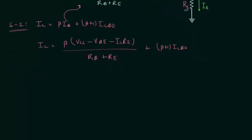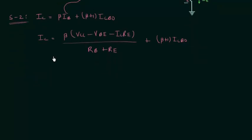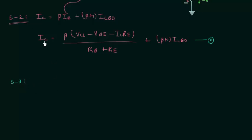So we are done with step number two. In step number three we have to differentiate this equation — let's call it equation number two — with respect to IC, keeping β and VBE constant.